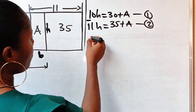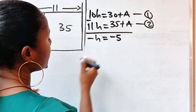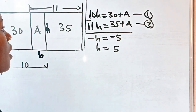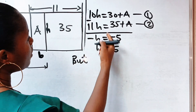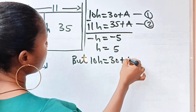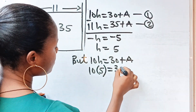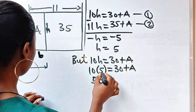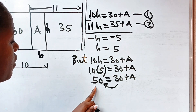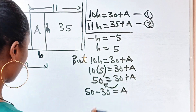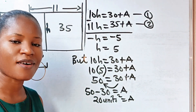Now let's subtract. Equation 1 minus equation 2 gives minus h equals minus 5, so h equals 5. Substituting back into equation 1: 10 times 5 equals 30 plus A, so 50 equals 30 plus A, and therefore A equals 50 minus 30, which is 20 units squared. We still got 20 as our answer.